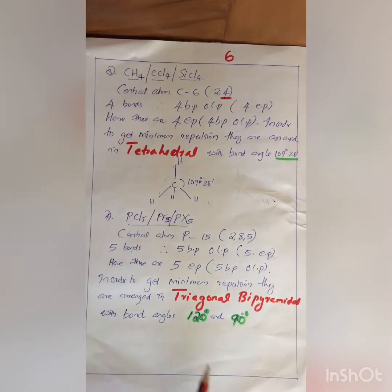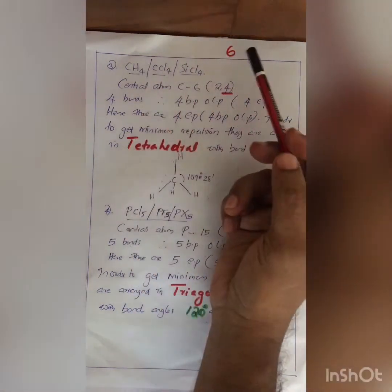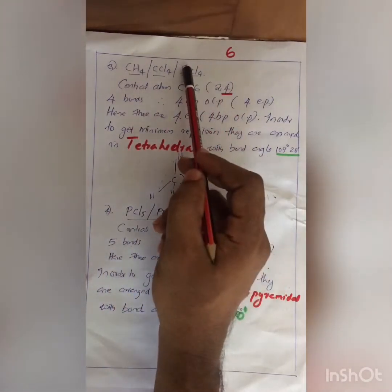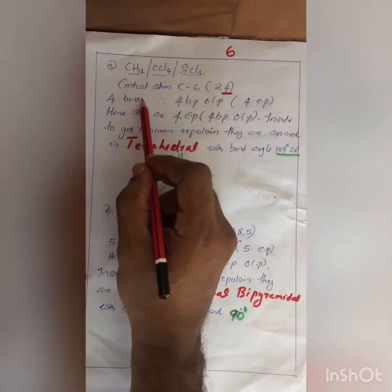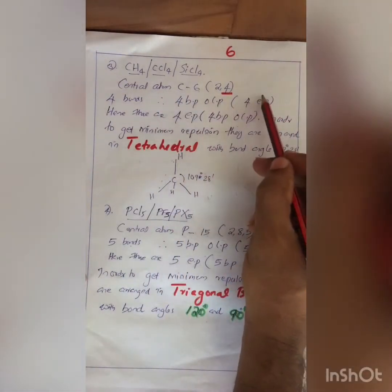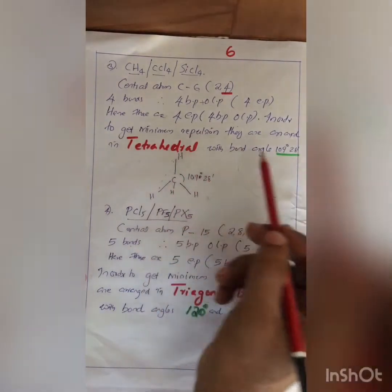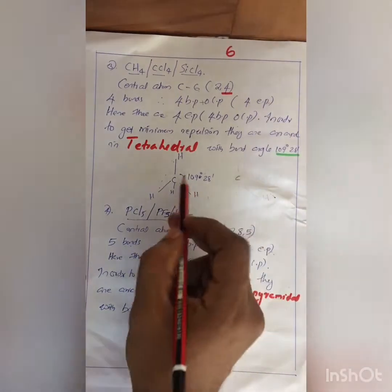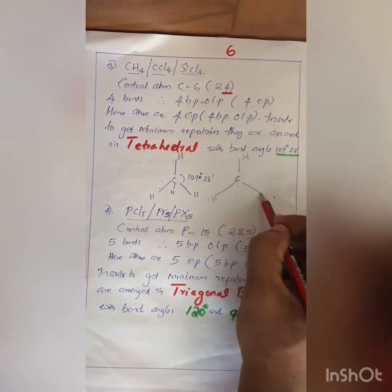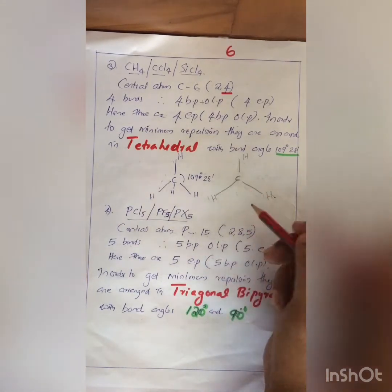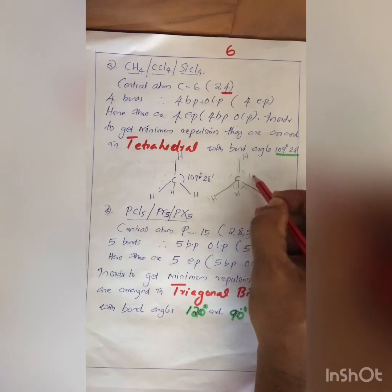Now, CH4 molecules — also CCl4 and SiCl4 — all have similar shape as they are 14th group elements with 4 electrons in the central atom. The central atom is carbon, atomic number 6, configuration 2,4. The outer shell has 4 bonds: 4 BP and 0 LP, giving 4 EP. In order to get minimal repulsion, they are arranged in tetrahedral with bond angle 109 degrees 28 minutes. This is a three-dimensional molecule, with two bonds facing toward you and two bonds away from the observer.